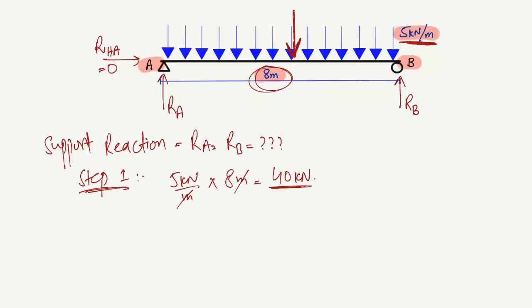In the first step, we multiplied the UDL value by the beam length to get the equivalent pointed load. Before, this was the UDL — uniformly distributed load — and now it is a concentrated or pointed load of 40 kN acting on the beam.